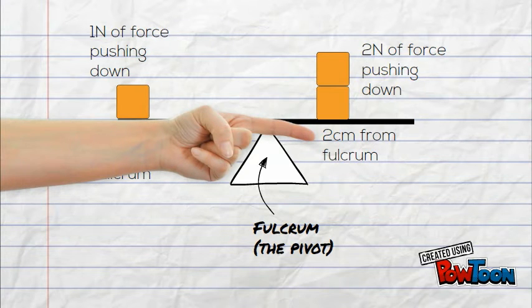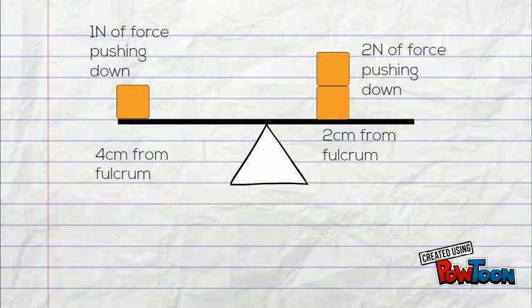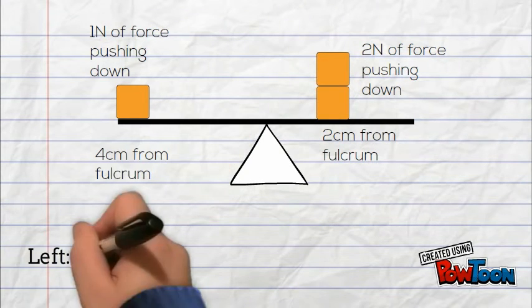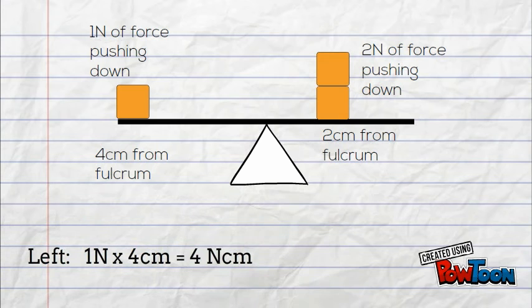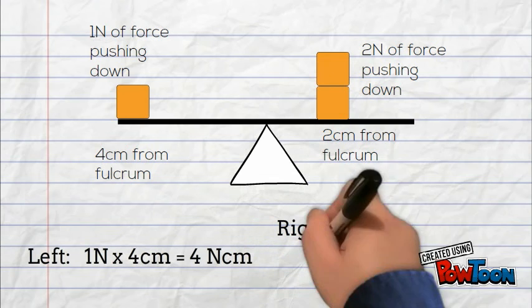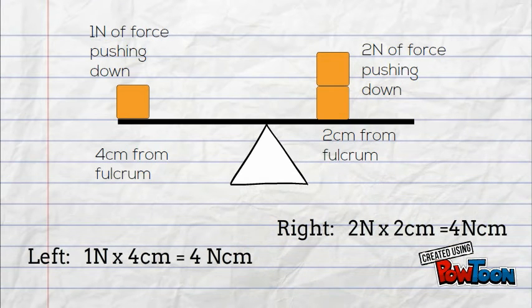So on the left: one newton times four centimetres equals four newton centimetres. And on the right: two newtons times two centimetres equals four newton centimetres. Left and right both have a turning force of four newton centimetres, so the beam is balanced — just like a well set-up seesaw.